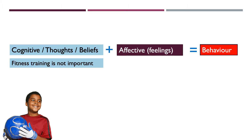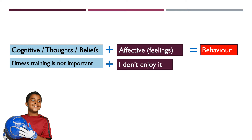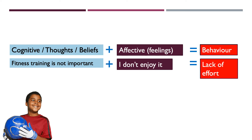A practical example could be around fitness training. The cognitions — the thought process — are that fitness training is not important and not something that's going to improve my gains. In addition, the feelings that fitness training produces mean the performer doesn't enjoy it. As a result, that's likely to equal a lack of effort, or even a lack of attendance at fitness training sessions, pre-season or otherwise. People may reject more physically demanding activities because their cognitions tell them it's not important and they don't enjoy it.